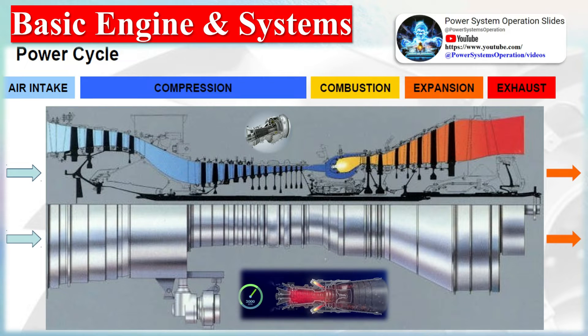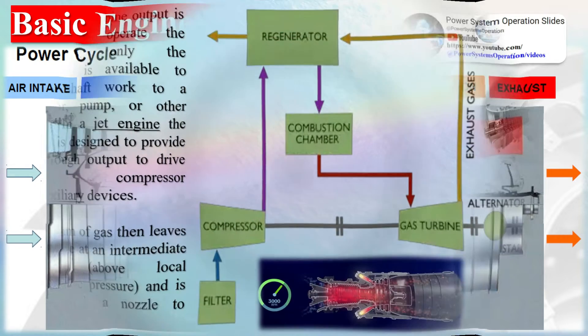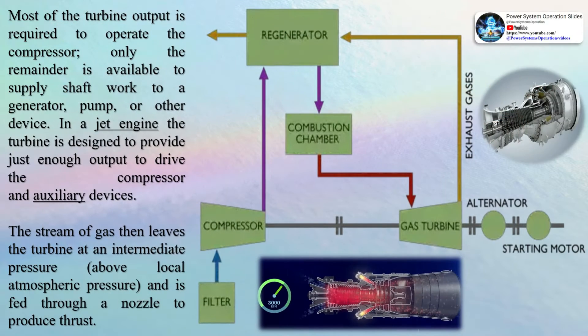The simple gas turbine is classified into five broad groups. First, frame-type heavy-duty gas turbines: large power generation units ranging from 3 megawatts to 480 megawatts in a simple cycle configuration with efficiency of 30 to 39 percent.